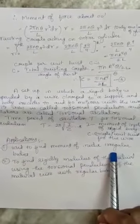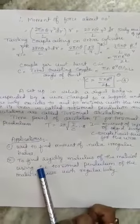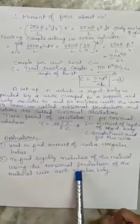Next, what are the applications of torsional pendulum? It is used to find the moment of inertia of irregular bodies and also used to find the rigidity modulus of the material using torsional pendulum of the material wire with regular bodies. So this is all about the torsional pendulum, its oscillation and time period.